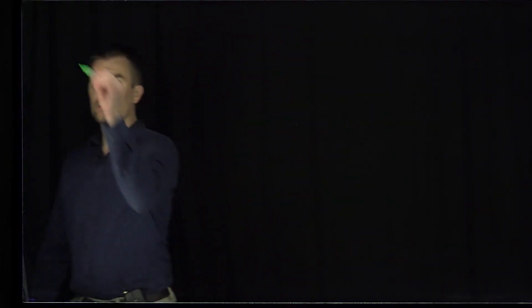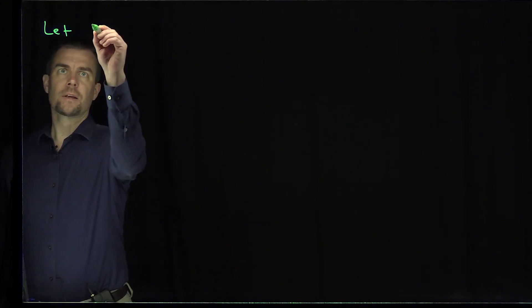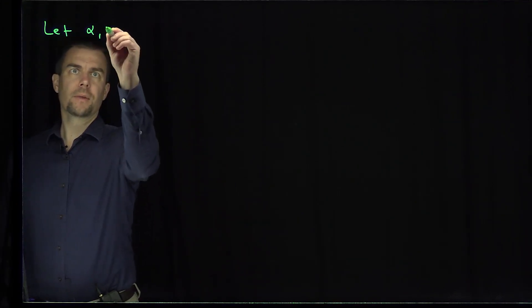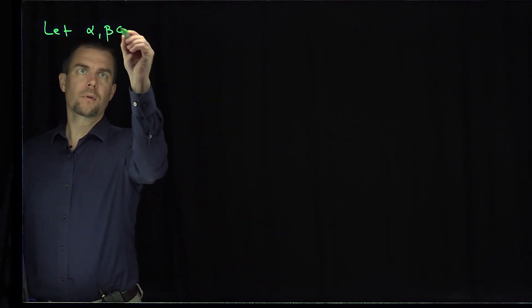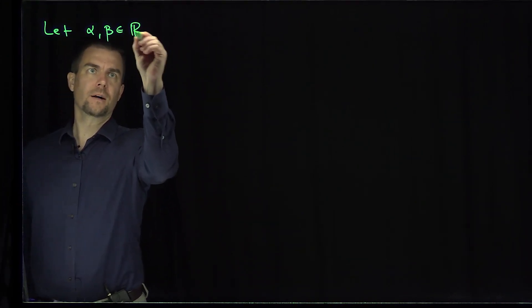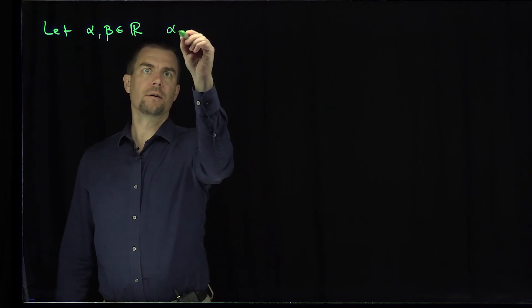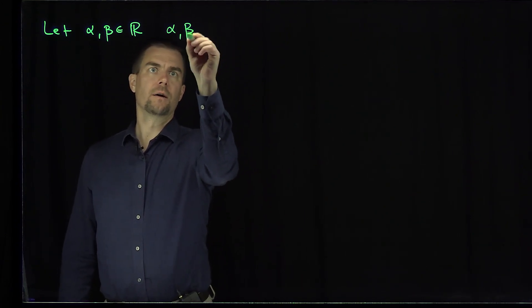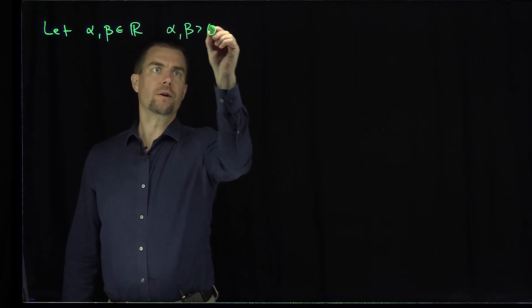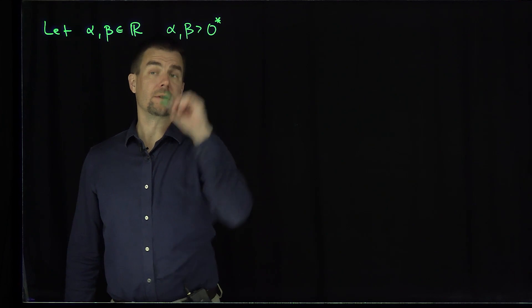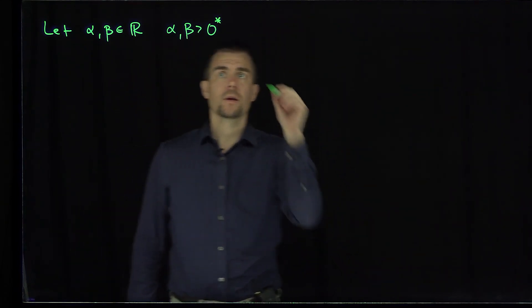Hello, students. In this video, we'll define the multiplication of two Dedekind cuts. Let alpha and beta be Dedekind cuts with the property that alpha and beta are both greater than the zero cut — they're not negative cuts.